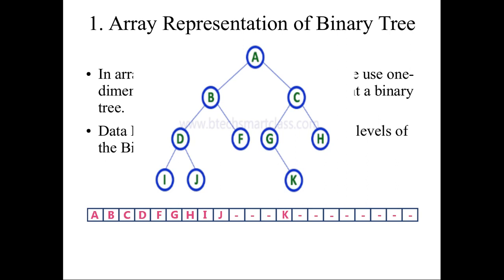I does not have any child, so left and right child are empty — that is 2 null entries. Similarly, J also does not have any children, so again 2 null nodes. K also does not have any children, so again null. In summary, wherever a node does not have any children, you have to give null nodes at that position. You write it level by level in the array, and from left to right.